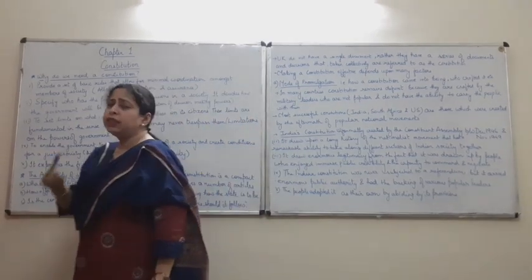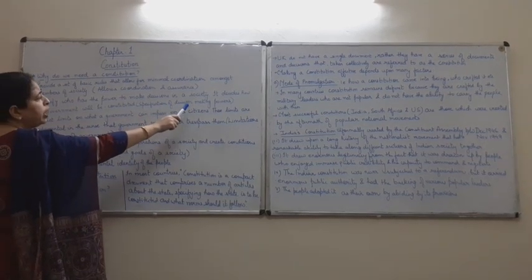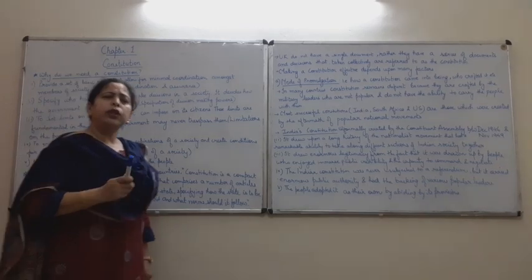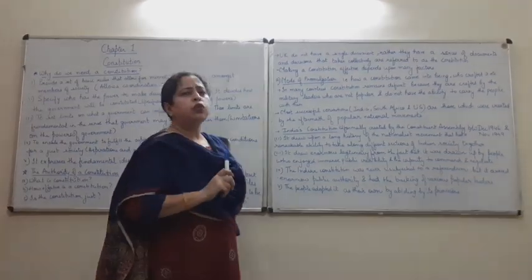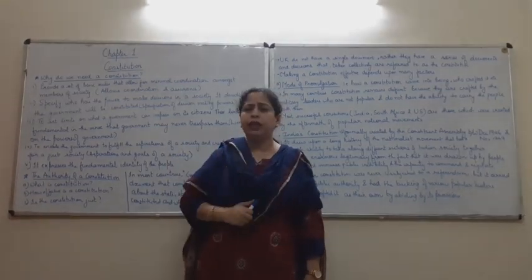So what they do? They come together and they form a government. And the government takes the decisions on the basis of the consensus taken from the people. For example, in India, we have the Parliament. The Parliament makes laws and those laws are then further voted for. And finally, the laws come into existence. So this is done by the Constitution - the specification of decision making power.